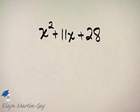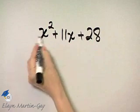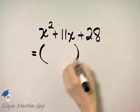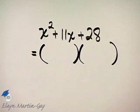It is a trinomial. Since the coefficient of x squared is 1, let's see if we can factor it as the product of two binomials.